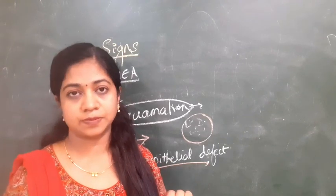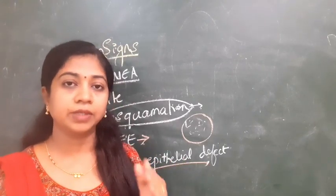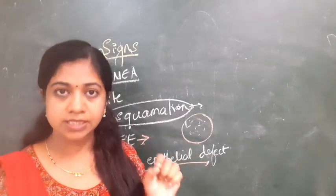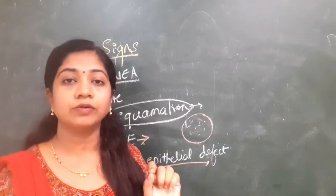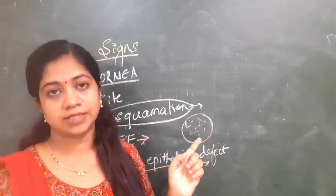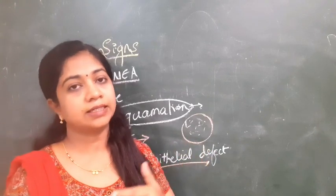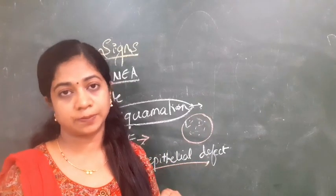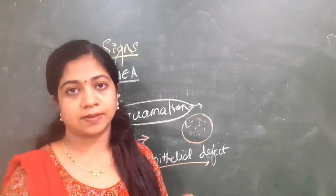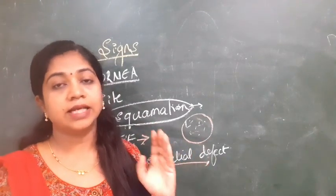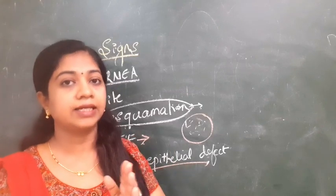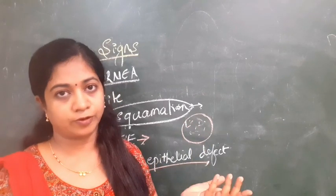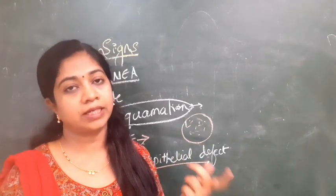In herpes simplex keratitis patients, if there is persistent epithelial defect but no active viral replication or active inflammation, you should think of neurotrophic corneal ulcer, where the treatment is different. If you treat in the line of antivirals, the patient may not respond. So think of trophic corneal ulcer whenever there is persistent epithelial defect in post-HSV keratitis. One more peculiarity: even after effective treatment and scar formation, the scar can quickly break down and lead to trophic ulcer formation again — relapses are the rule.